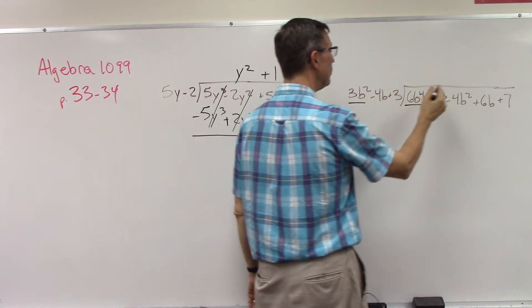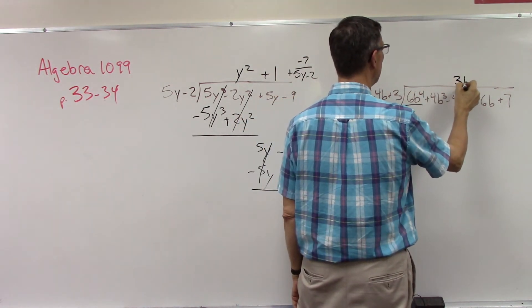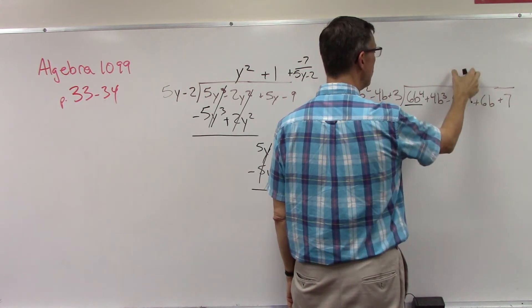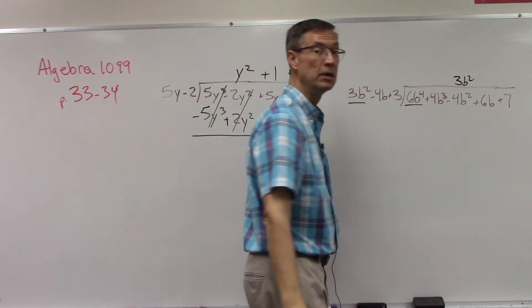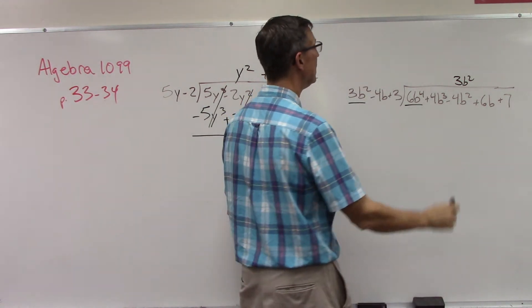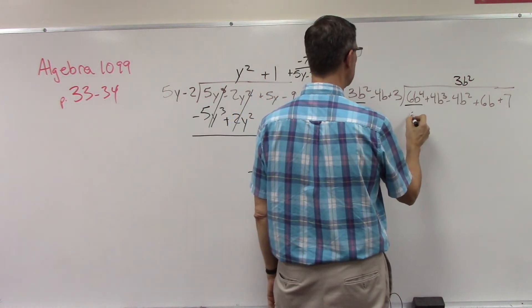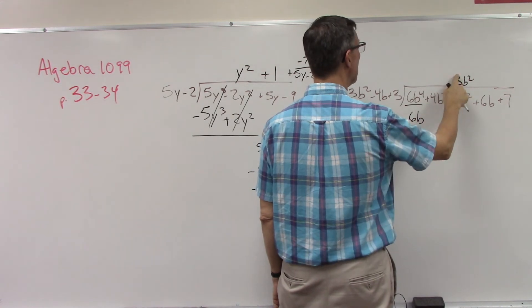So 3b squared. Notice I'm lining it up over the b squared term because that reminds me that I probably only have three terms in my answer. Multiply back again, 6... excuse me, I wrote 3, it should be 2.